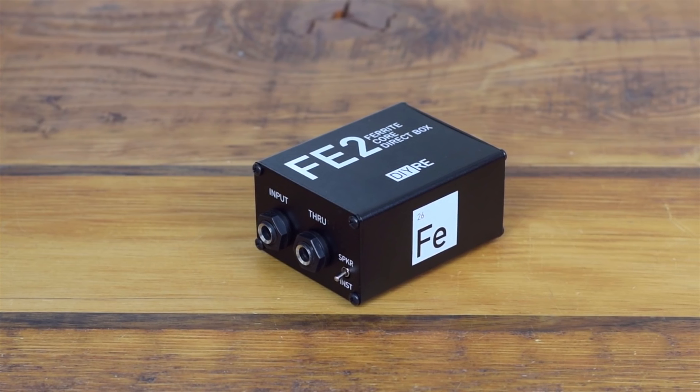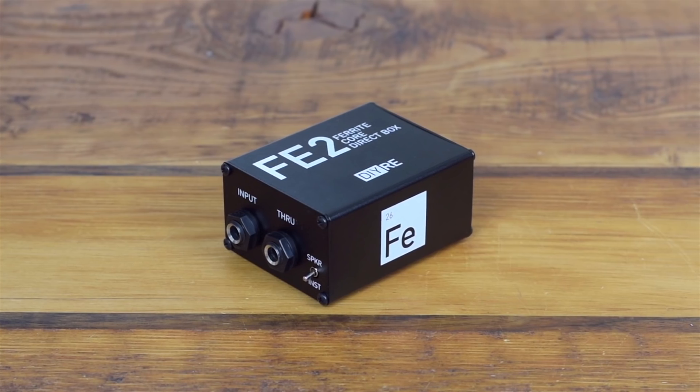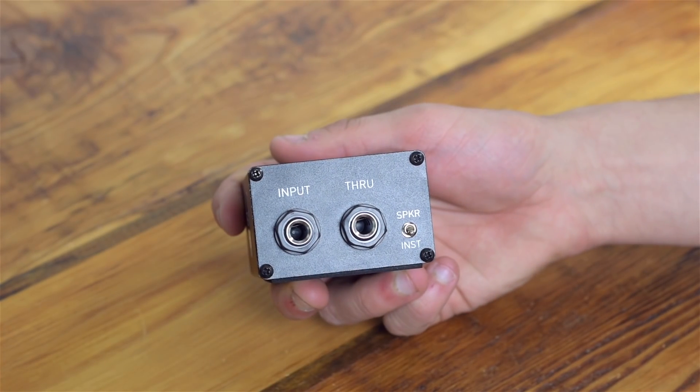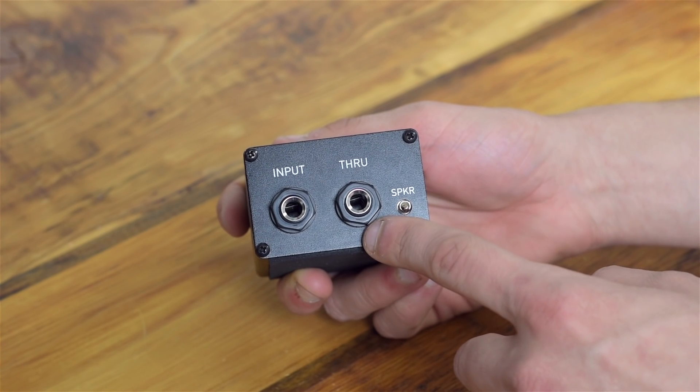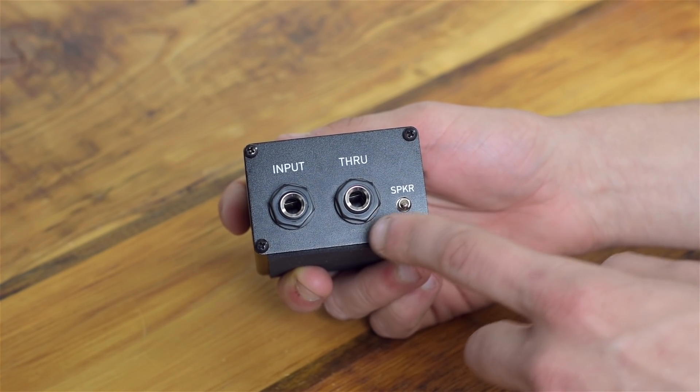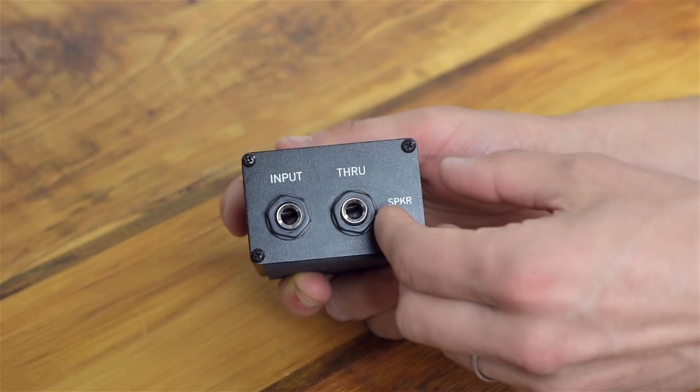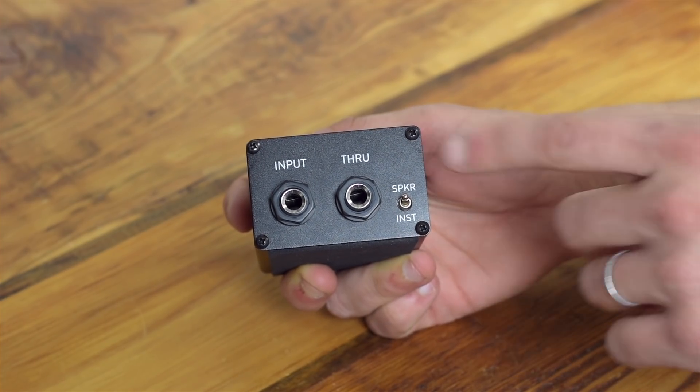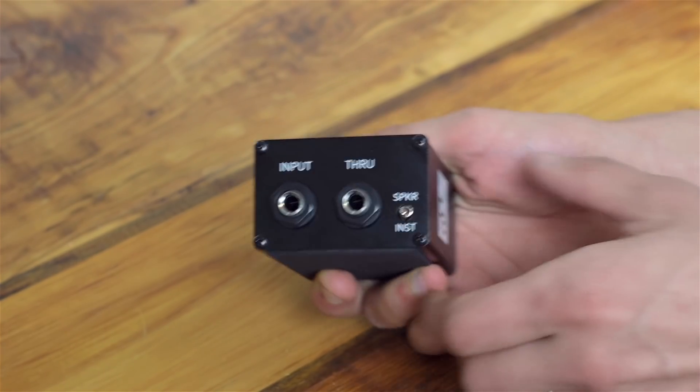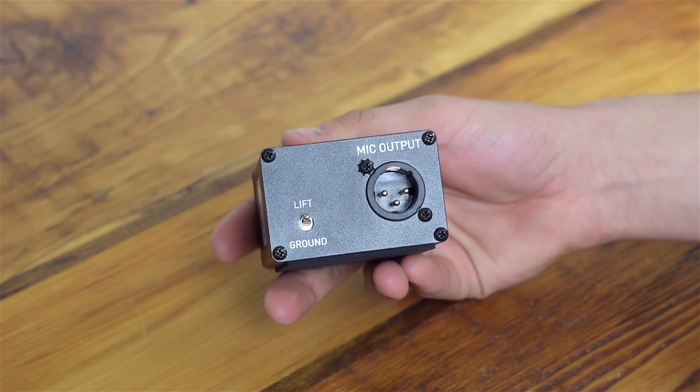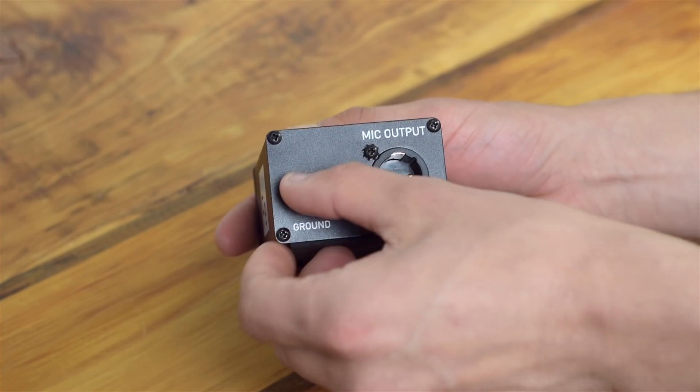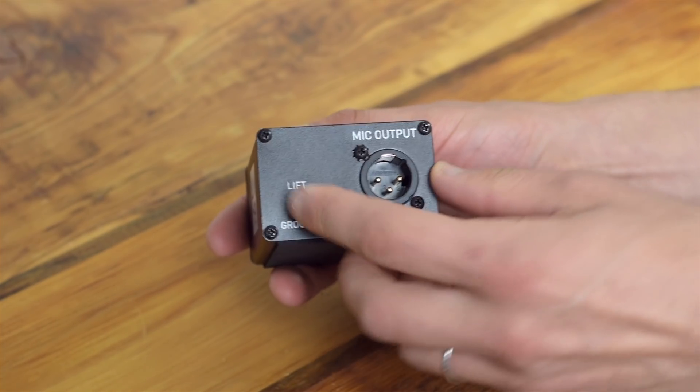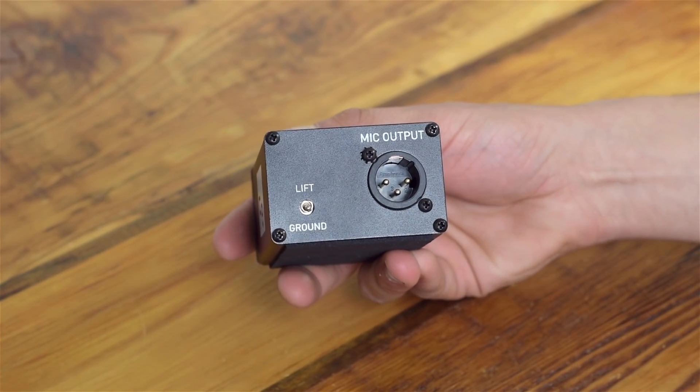Congrats on finishing your FE2 passive DI box. Connect your source to the input and connect the through jack to an amplifier or speaker. Then use the switch to select whether you've connected an amp or an instrument to the input. Connect the output to a mic preamp of your choice. And if you're having ground hum, use the lift switch. The default position is ground.